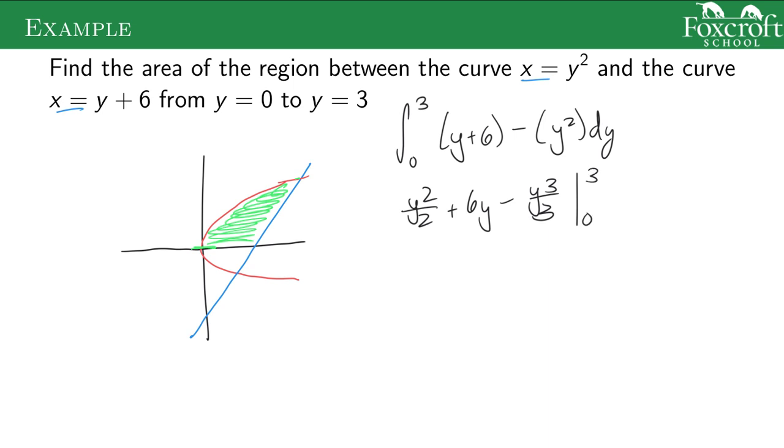Put in 3 first. Again, we will subtract when we plug in 0, because it's all y's it all just turns into 0. 9 halves plus 18 minus 27 over 3. Get all these common denominators and combine them. Let's just save some time and have the calculator do that for us. It ends up being 27 over 2.